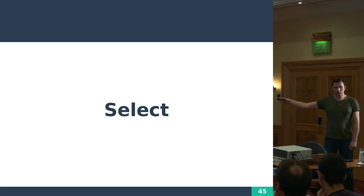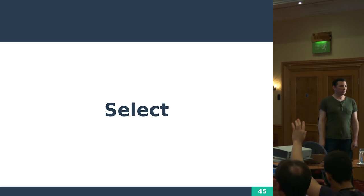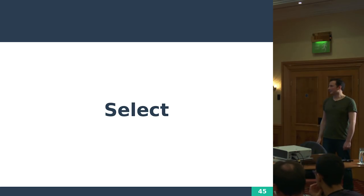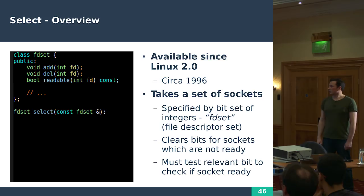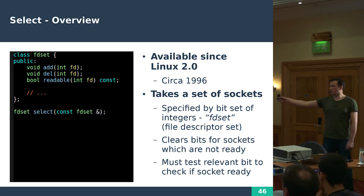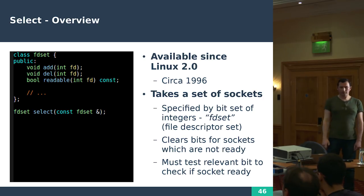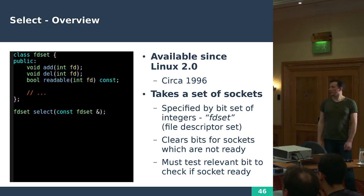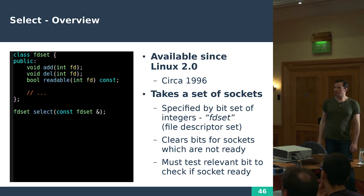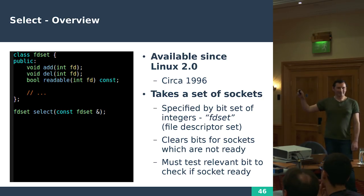So, select. Has anyone used select before? It's been available since Linux 2.0 — around 1996, so 20 years in operating systems. It might have been in other systems before that. It's quite a simple concept. It has this abstraction called an FD set — I've made it look a lot nicer here; the actual C code and system calls for this, as some of you know, is a lot nastier. But conceptually it's a set of sockets — actually a bit set where each bit represents a file descriptor as an integer.